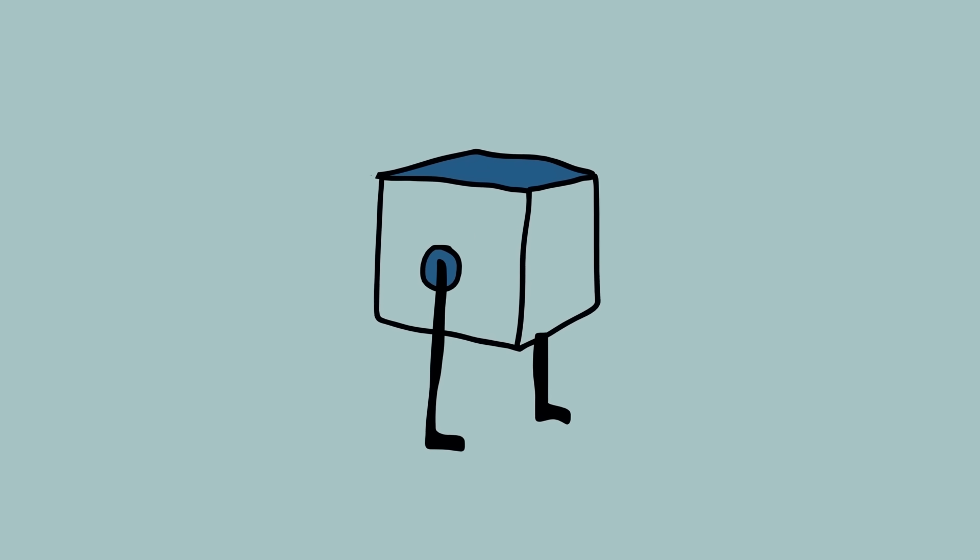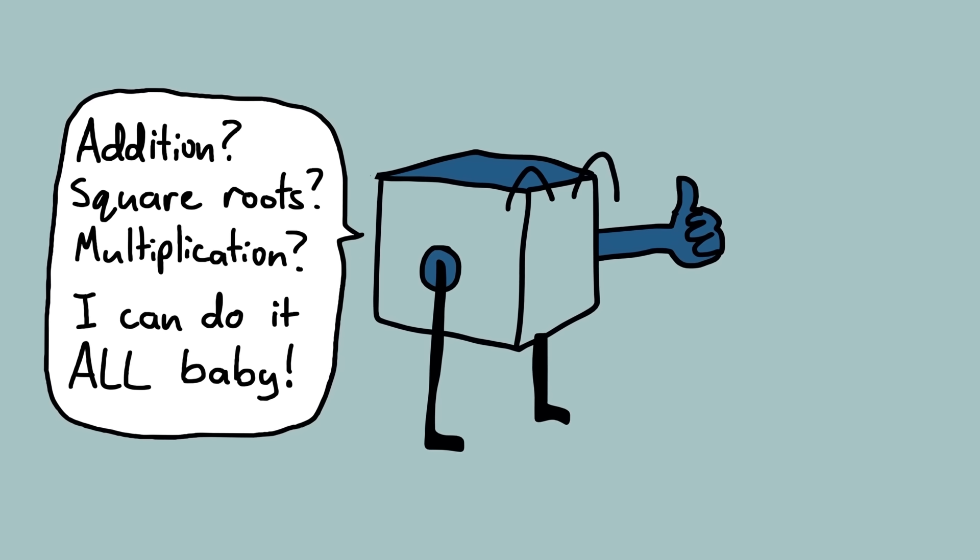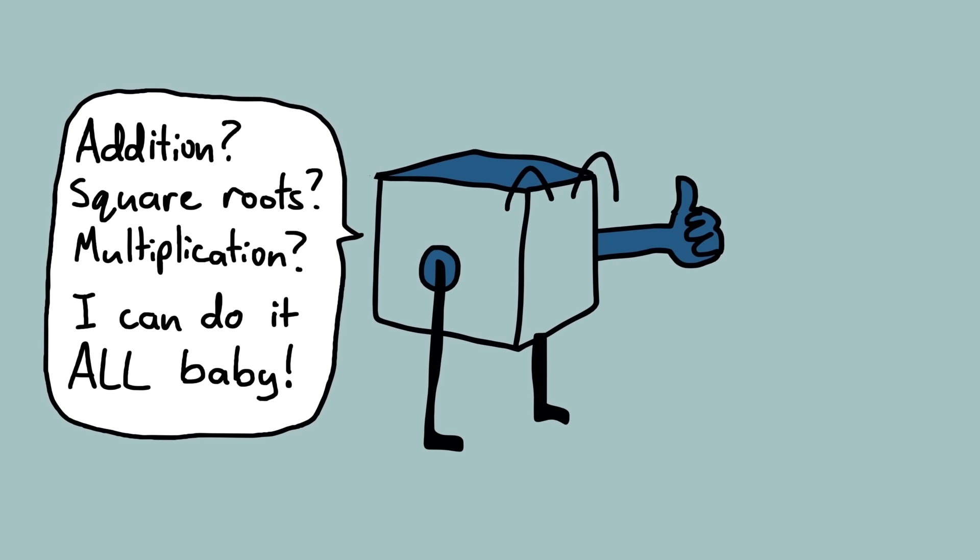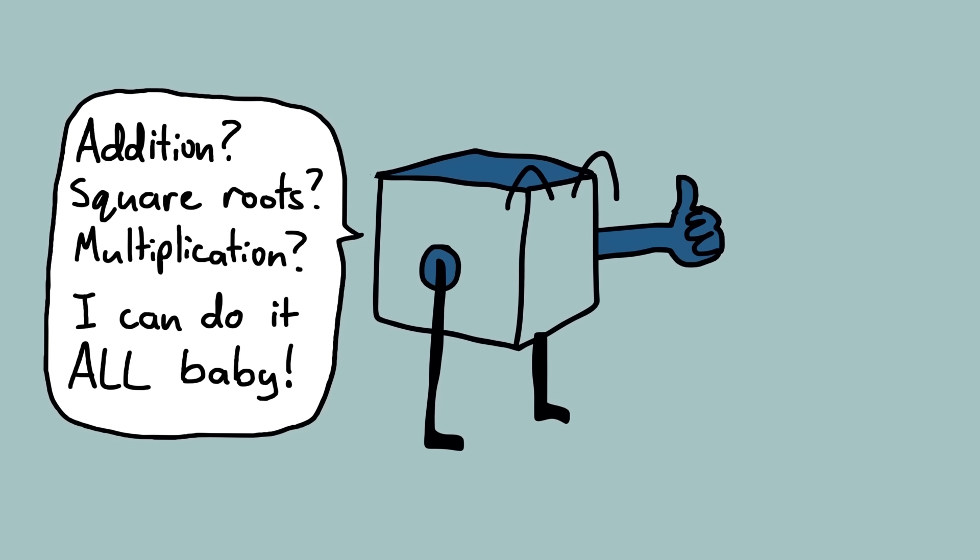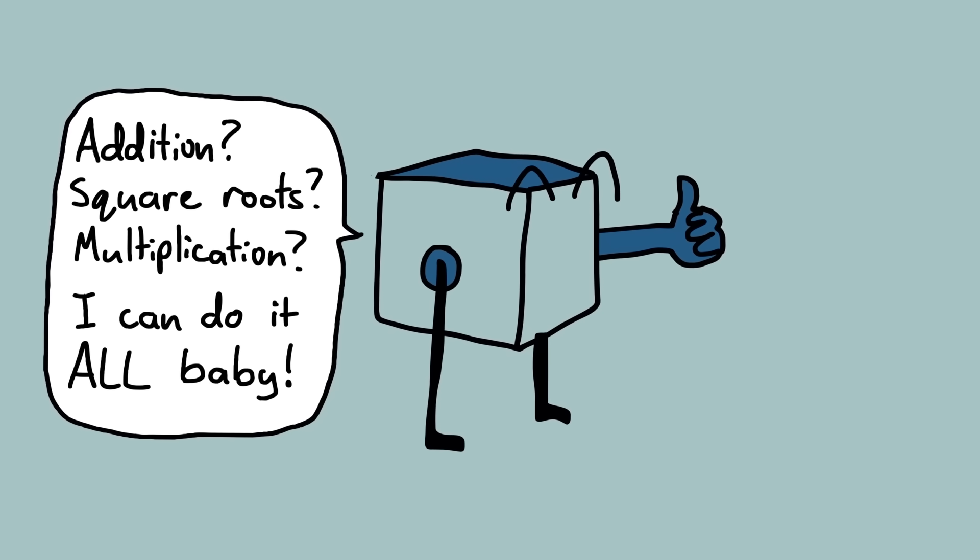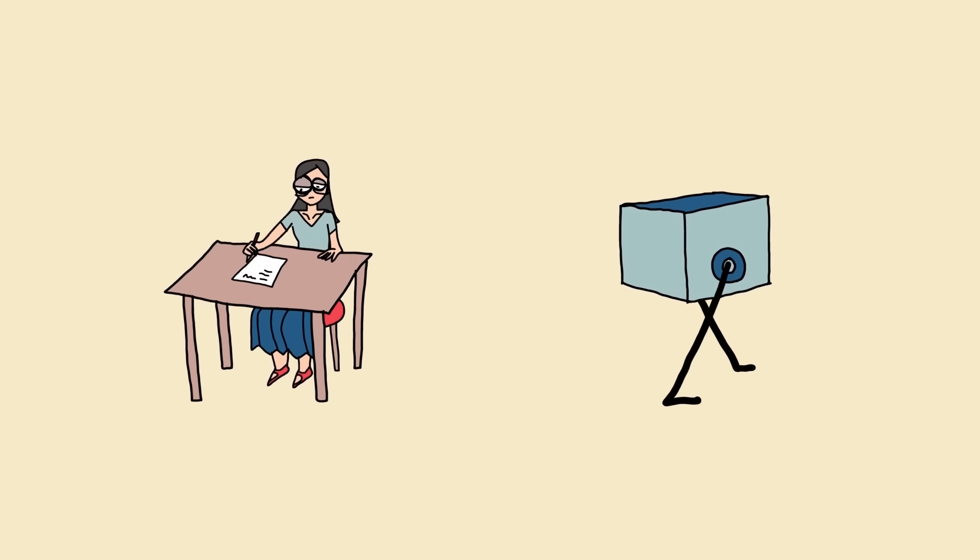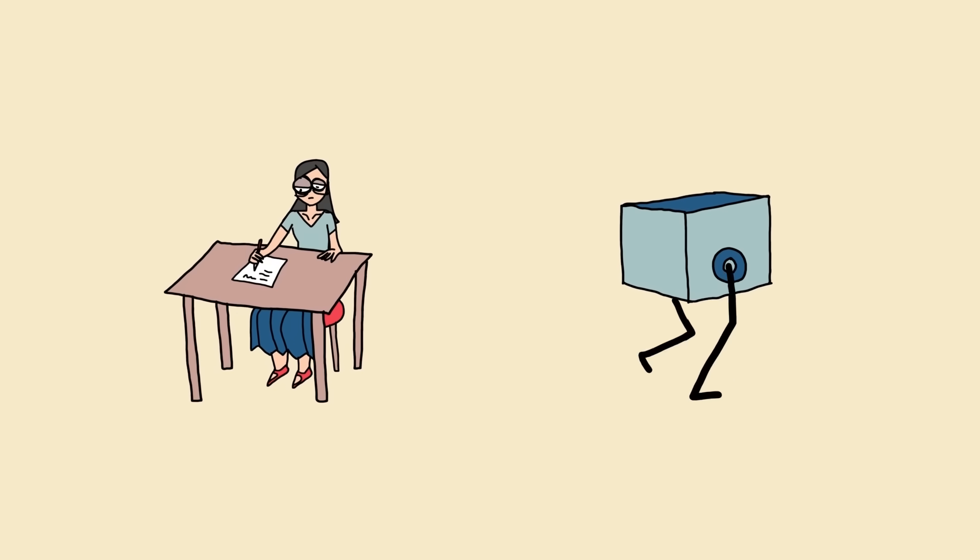Today, we know this as a programmable computer. We have computers which we can program to do different things after they've been built. That idea originated right here in Turing's paper. He dreamed up a theoretical machine that could perform the same tasks as any other of his machines. And that was pretty freaking incredible. Even though this theoretical machine is incredibly simple, it can, in principle, do everything that a human computer can do.